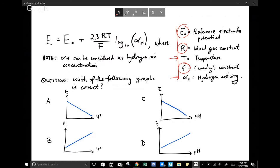But I guess you should probably take note of certain things. So here, take note of this. It says that alpha H, which is the activity of the hydrogen ion, can be considered as hydrogen ion concentration. So here we can see how this could link to one of our answers.